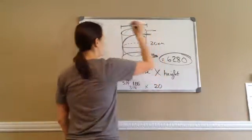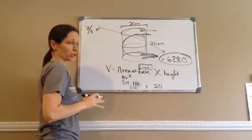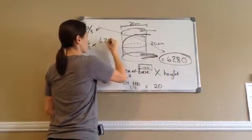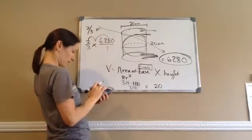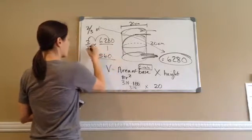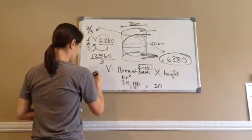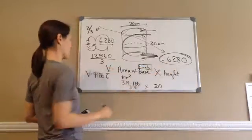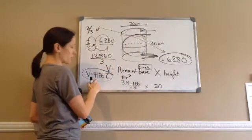A sphere is two-thirds of the volume of a cylinder. So we're going to take two-thirds of 6,280. Two times 6,280 is 12,560, divided by 3, which gives 4,186.6 repeating. So the volume of this sphere is 4,186.6 centimeters cubed.